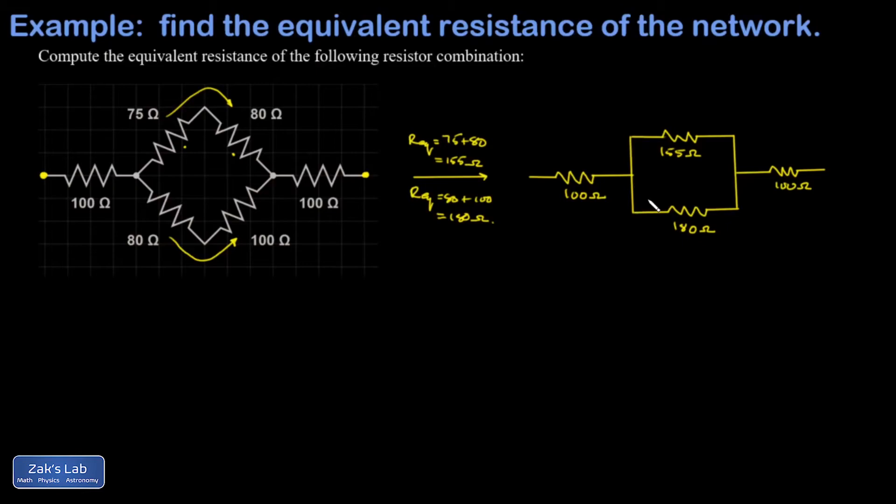When I get to this node, the current has a choice of either going through the 155 ohm equivalent or 180 ohm equivalent, and then they come back together and all the current would flow through the last resistor.